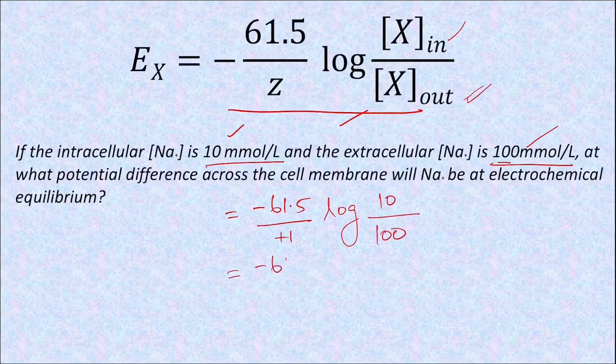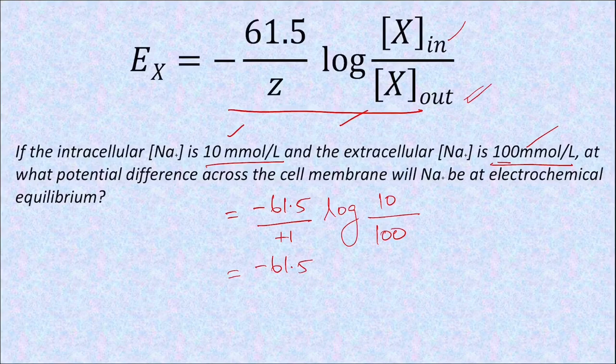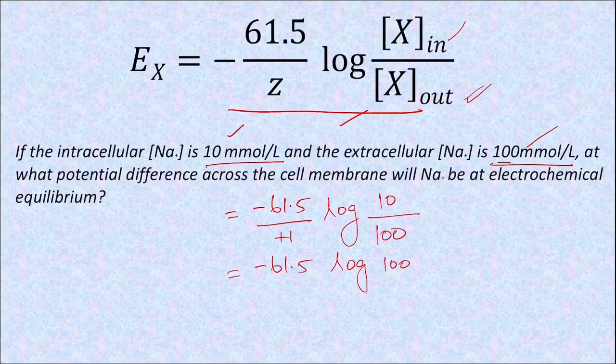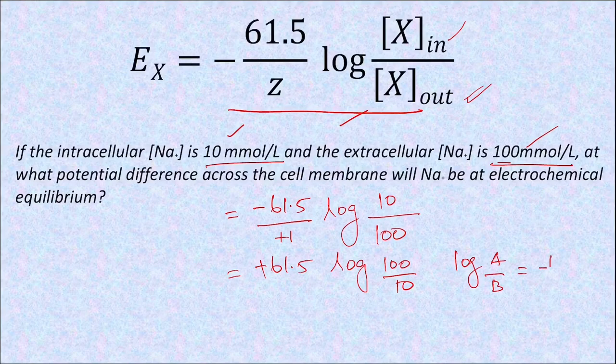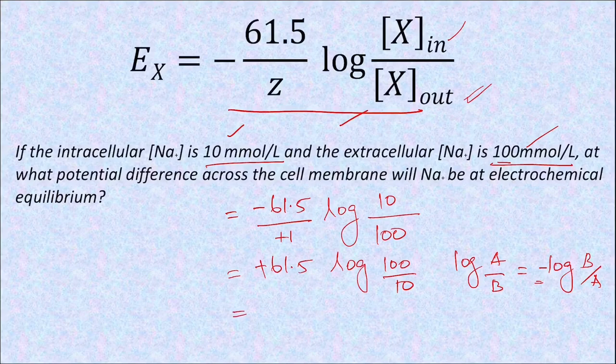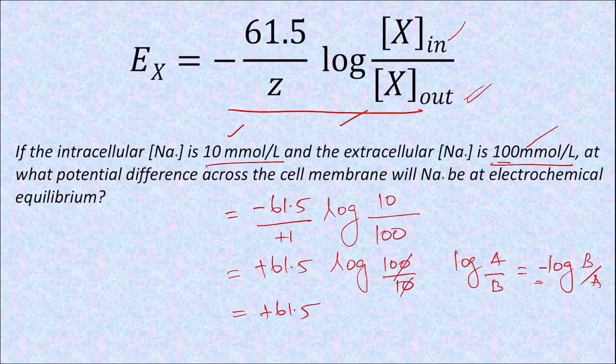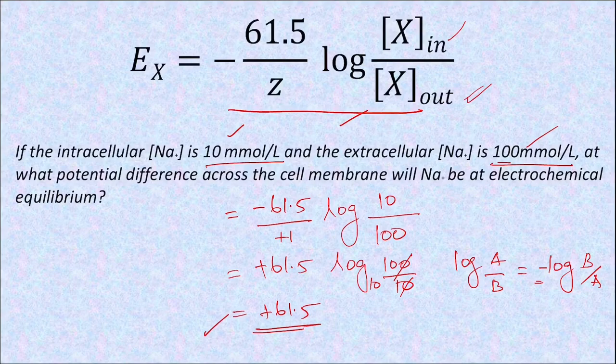This is minus 61.5, so log of 10 by 100. We can reverse it as 100 by 10, which creates one minus, so we add it in front, making it plus 61.5. This is because log a by b equals minus log of b by a, so we've added this minus in front and exchanged the numerator and denominator. So this is plus 61.5 times log of 10, and log base 10 of 10 is 1, so the answer is plus 61.5. So what does this mean?